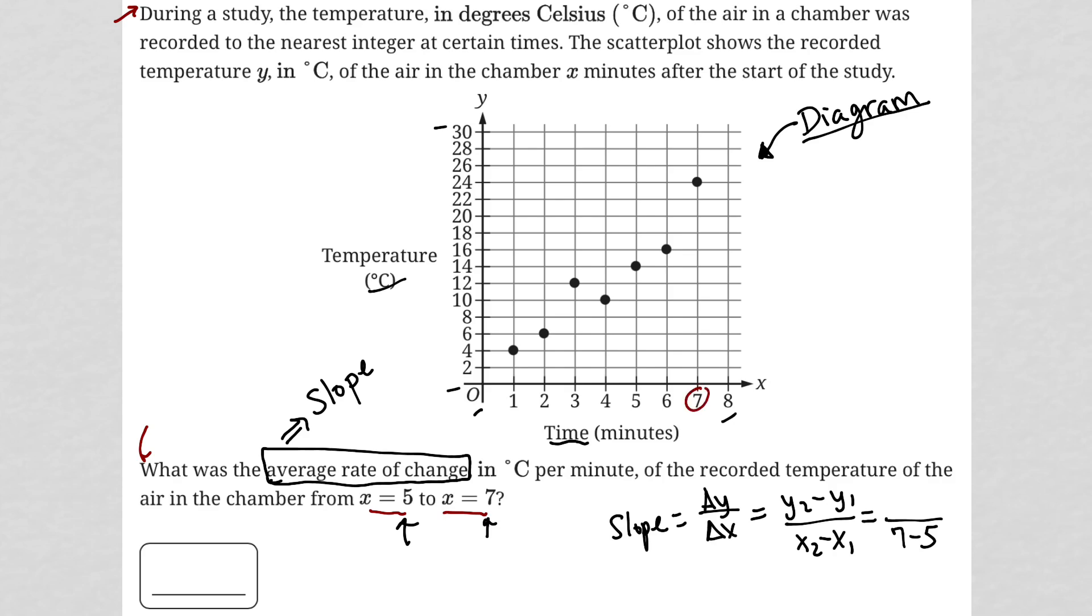At x equals seven, the temperature is 24, right? Exactly. So then let's say I'd have a 24 here minus when x equals five, the temperature is 14.